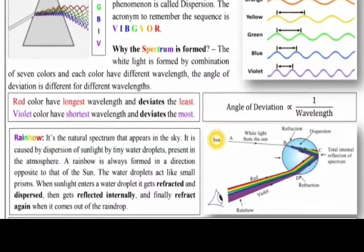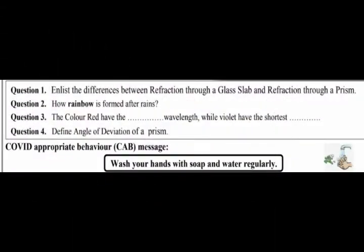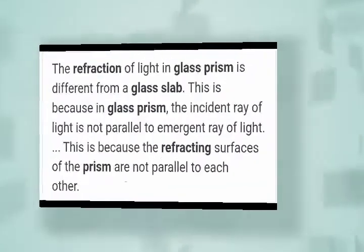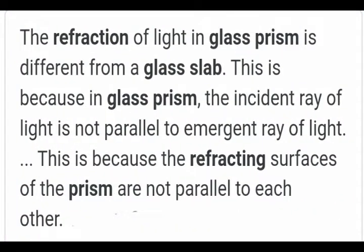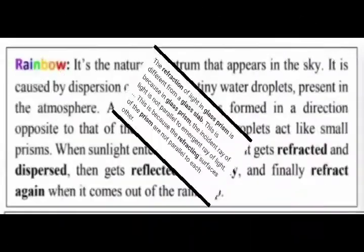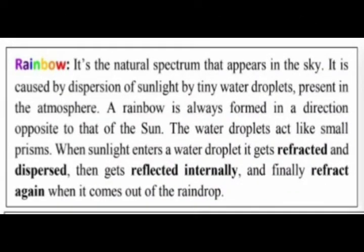Question 1: List the difference between refraction through a glass slab and refraction through a prism. In a glass prism, the incident ray of light is not parallel to the emergent ray. This is because the refracting surfaces of the prism are not parallel to each other, unlike in a glass slab.